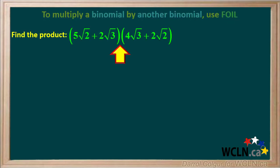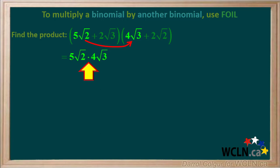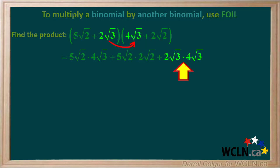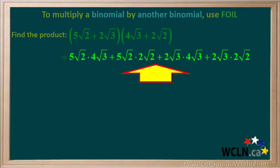We are asked to find the product of these two binomials. We start by multiplying the first terms: 5 root 2 times 4 root 3. Now we multiply the outside terms: 5 root 2 times 2 root 2. Next we multiply the inside terms: 2 root 3 times 4 root 3. Lastly we multiply the last terms: 2 root 3 and 2 root 2. Now we have a long expression containing 4 terms.